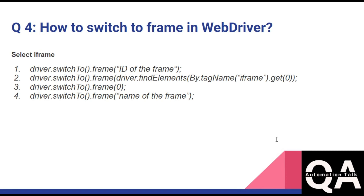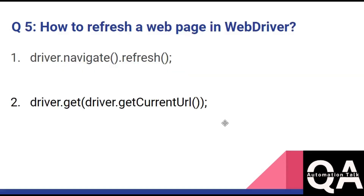The next question is: how to switch to a frame in Selenium WebDriver? First, you have to identify the frame, then use driver.switchTo() with your chosen locator. You can locate the frame by index, by name, or by tag name. After switching to the frame, you perform some actions, and then you can return to the default content using switchTo().defaultContent().